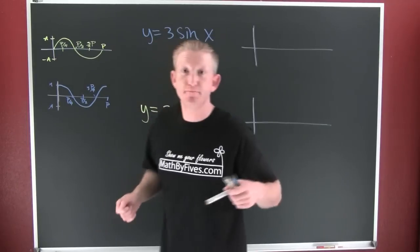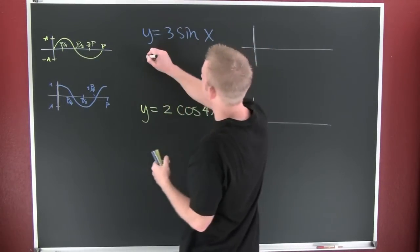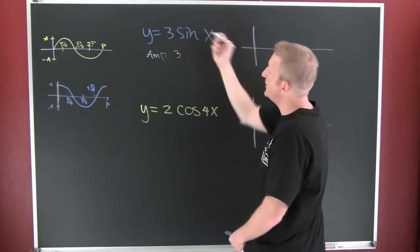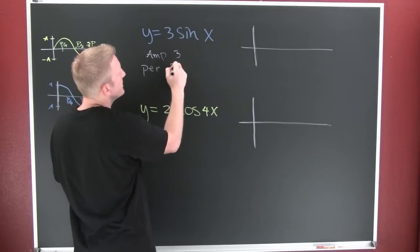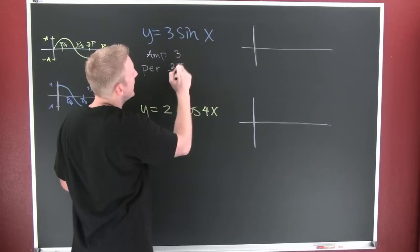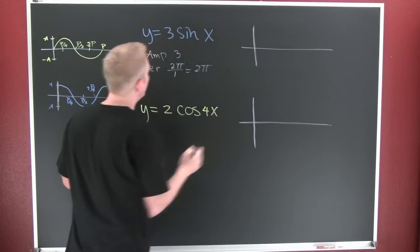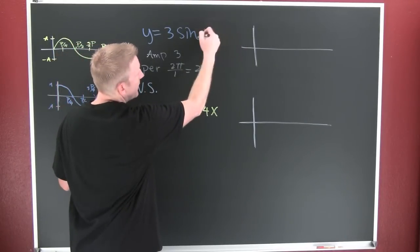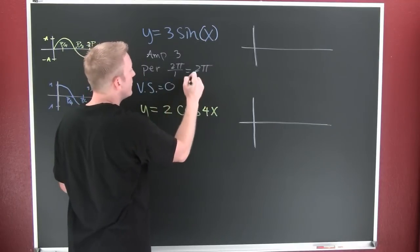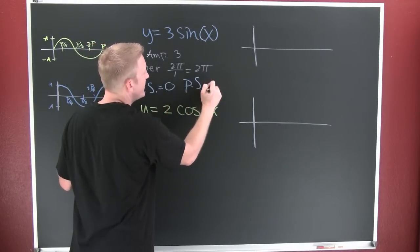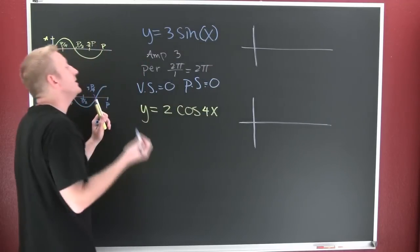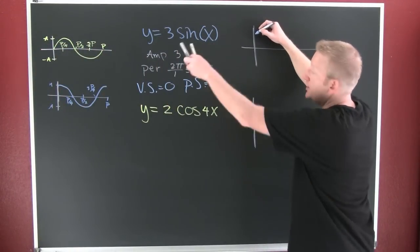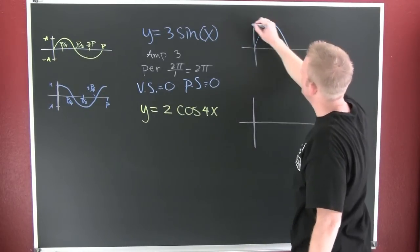Let's graph a couple of these. Let's get our characteristics. What's my amplitude going to be? My amplitude here is going to be three — because that's the number in front of the sine. What about my period? My period is going to be 2π over b. What's b here? It's going to be one. So that's going to be 2π. What's my vertical shift? There's nothing added outside the argument, so my vertical shift is zero. There's also not going to be any phase shift. Sine starts at zero — you do this, one period.